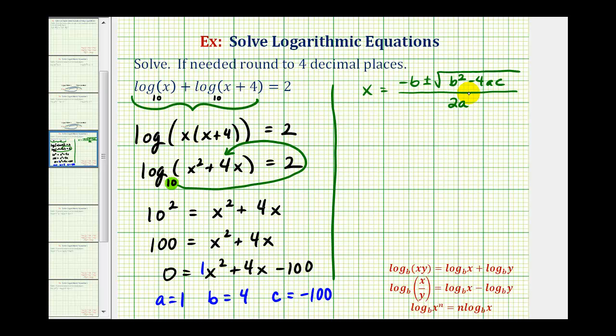So here's the quadratic formula. So now we'll perform substitution for a, b, and c. So we'll have x equals negative b, or negative four, plus or minus the square root of b squared, or four squared, minus four times a, which is one,